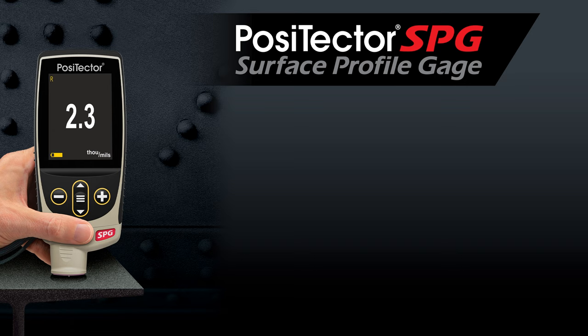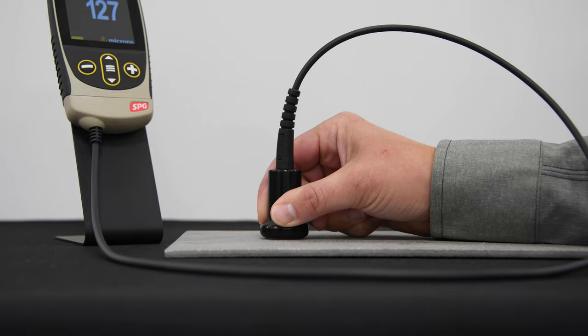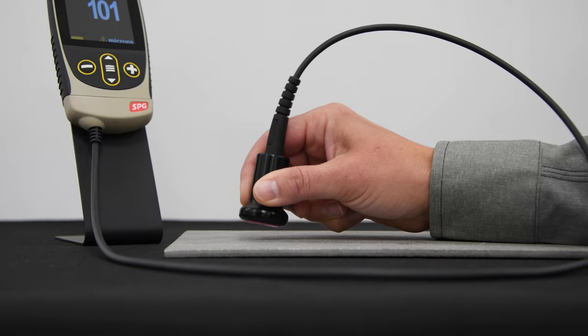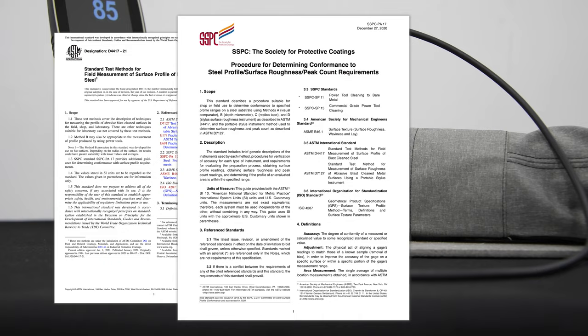The PosiTector SPG surface profile gauge is popular for users who want a fully digital test with zero per test cost. The digital depth micrometer is fitted with a fine pointed probe to measure and record peak to valley surface profile heights in accordance with ASTM D4417 Method B and SSPC PA17.